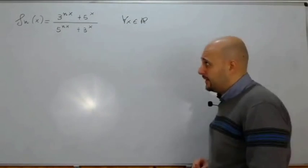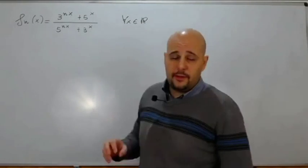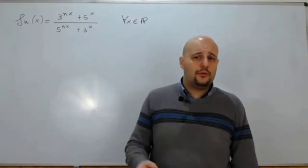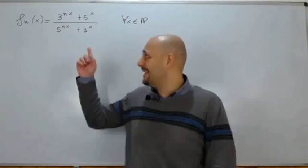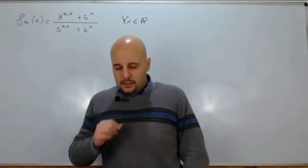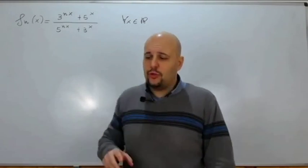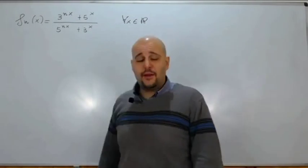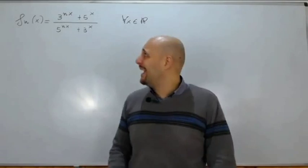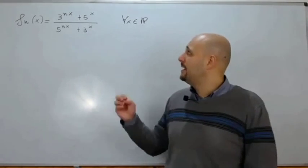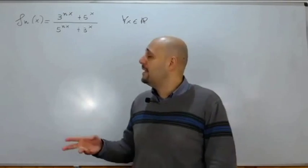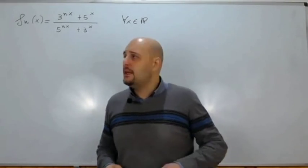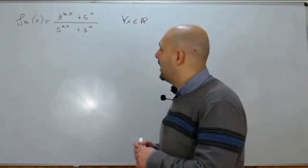Diciamo quest'altro interessante esercizio: ci chiedono di determinare l'insieme di convergenza puntuale e la funzione limite della assegnata successione di funzioni, dove x è un reale. f_n(x) è uguale a 3^(nx) + 5^x, tutto fratto 5^(nx) + 3^x.